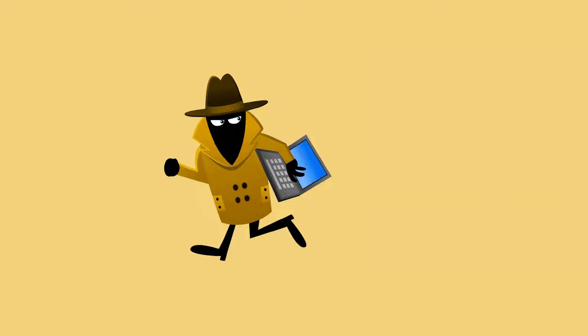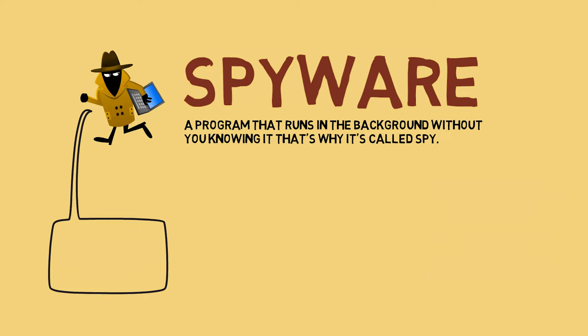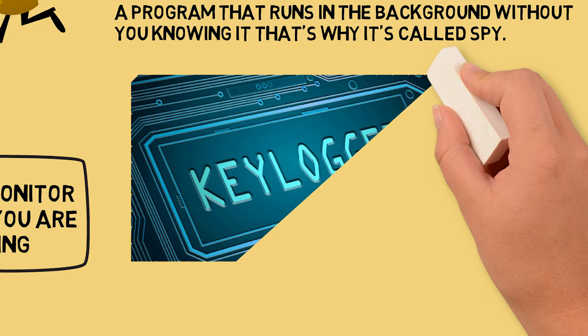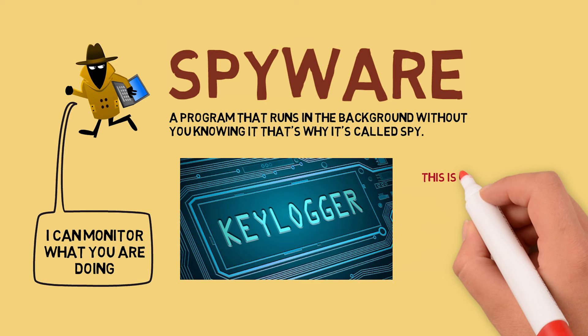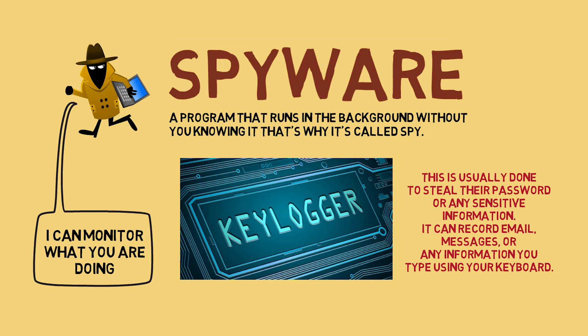The next variant is Spyware. A program that runs in the background without you knowing it — that's why it's called Spy. It can monitor what you are currently doing and typing through key logging. A keylogger is a tool used to record keystrokes done by the users. This is usually done to steal their password or any sensitive information. It can record email, messages, or any information you type using your keyboard.